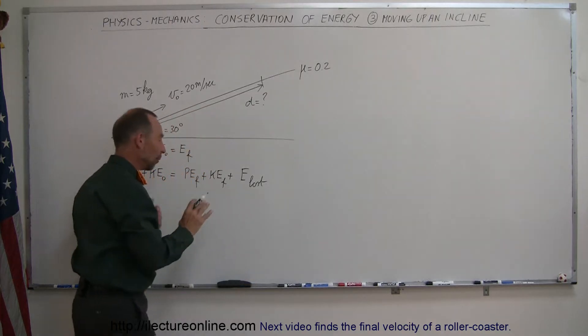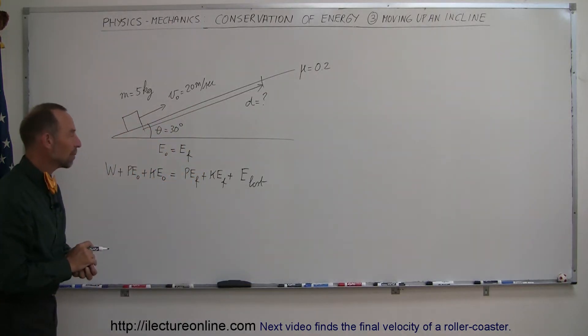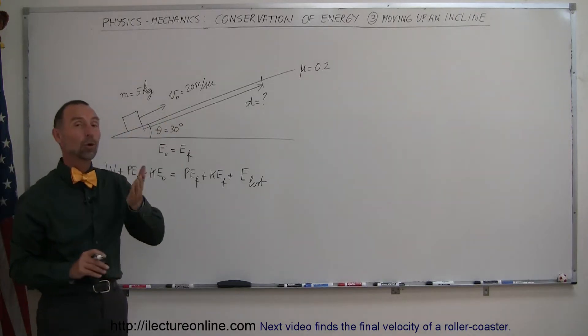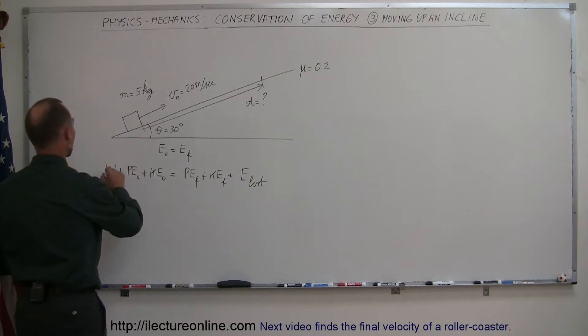So that's always the case. We'll always use that very same equation. Now we have to determine which of these terms are not needed. Well, for one thing, there's not a continual push up the incline, so no work put into the system. That goes to 0.